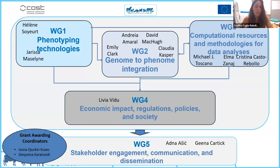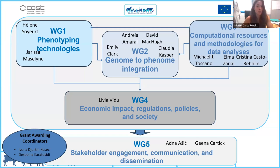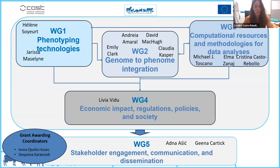This project is divided into five working groups, each with specific objectives and deliverables. Working groups one, two, and three are more closely linked and focused on research objectives: Working Group 1 on the state of the art of phenotyping technology, Working Group 2 on the integration of the genome to phenome, and Working Group 3 on computational resources and methods used for phenomics. Working Group 4 is related to policy and economic implications, and the last group focuses on dissemination to society.